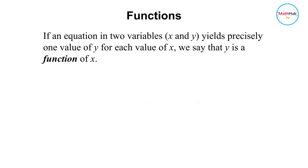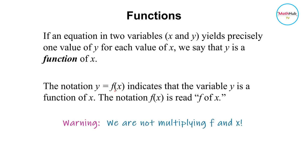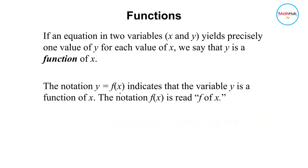If an equation in two variables, x and y, yields precisely one value of y for each value of x, we say that y is a function of x. The notation we are going to use for a function is y = f(x). This indicates that the variable y is a function of x, and we read this notation as 'f of x.' Take note: we're not multiplying these two — this is the notation for function, f of x. The value of y depends on the value you input to x.